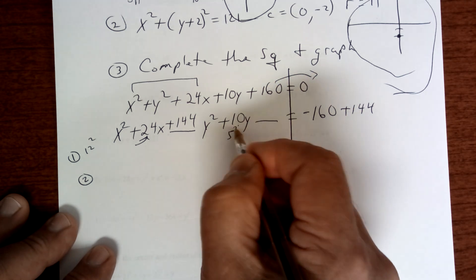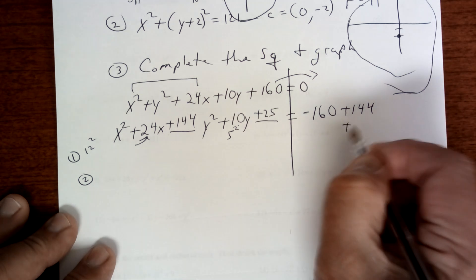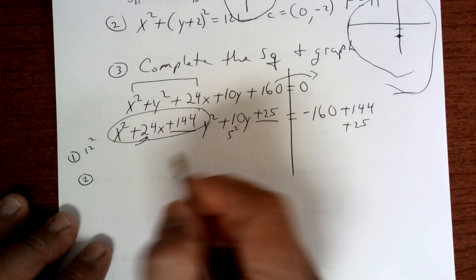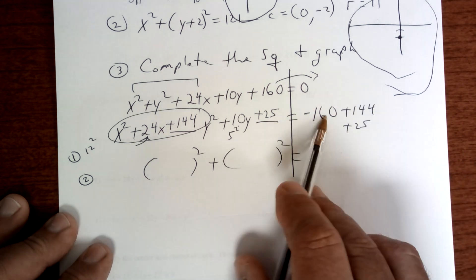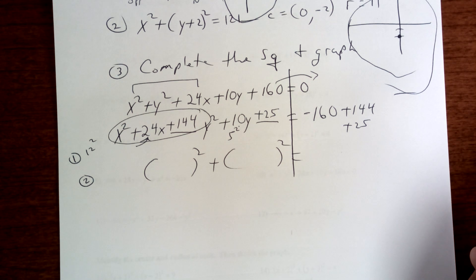You're going to take half of this term, which is 5, and you're going to square it and get 25. You're going to add 25 there and add 25 there. This becomes a perfect square trinomial, which is what we want.